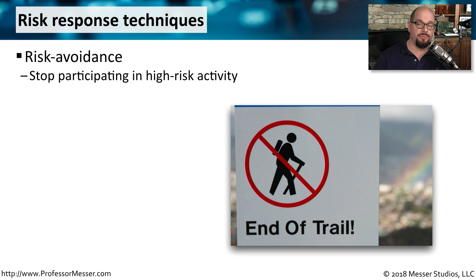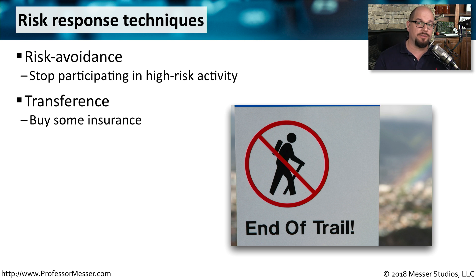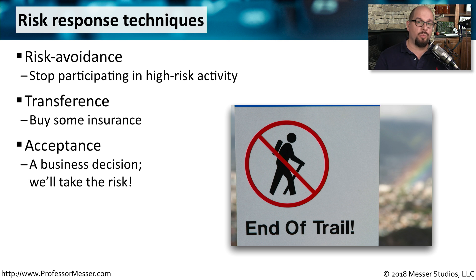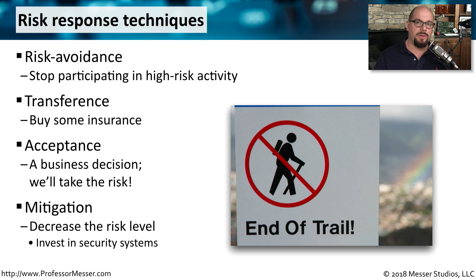There are many different ways to respond to business risk. One way is to simply avoid the risk completely — if you're participating in an activity that contains risk, you stop participating in that activity. That's not an option for most of us; instead, we need to continue performing those functions but find some way to mitigate the risk. One way to transfer the risk to another party is to purchase insurance. This may also be a situation where you simply accept the risk, knowing there's no insurance available and no way to mitigate it — it's part of doing business. Almost all computing systems also have risk mitigation built in; for example, putting a firewall between users and application servers decreases the risk that somebody may exploit a vulnerability on those systems.